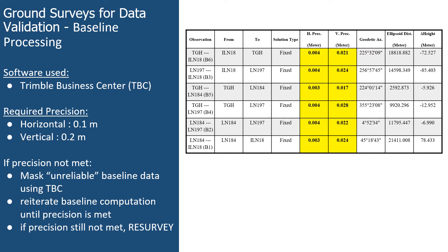The connection between two control points during observation is called a baseline. To determine the success of the survey, a certain precision must be met: the baseline horizontal error must not exceed 0.1 meter (10 centimeters), and the vertical error must not exceed 0.2 meters (20 centimeters). When the required precision is not met, masking is done — this excludes observations where the connection between the GPS receiver and satellites has been compromised. Processing is then done to see if the required precision is now met; if not, the survey may need to be redone.